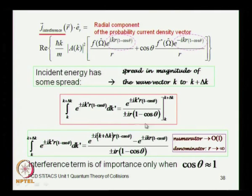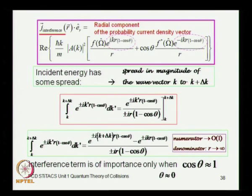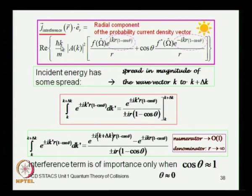So the interference term is of importance only for small angles — very tiny angles when cos θ is very nearly equal to 1, or θ is nearly equal to 0. This is what we deduced in our previous discussion: the interference term is of importance only for forward scattering.